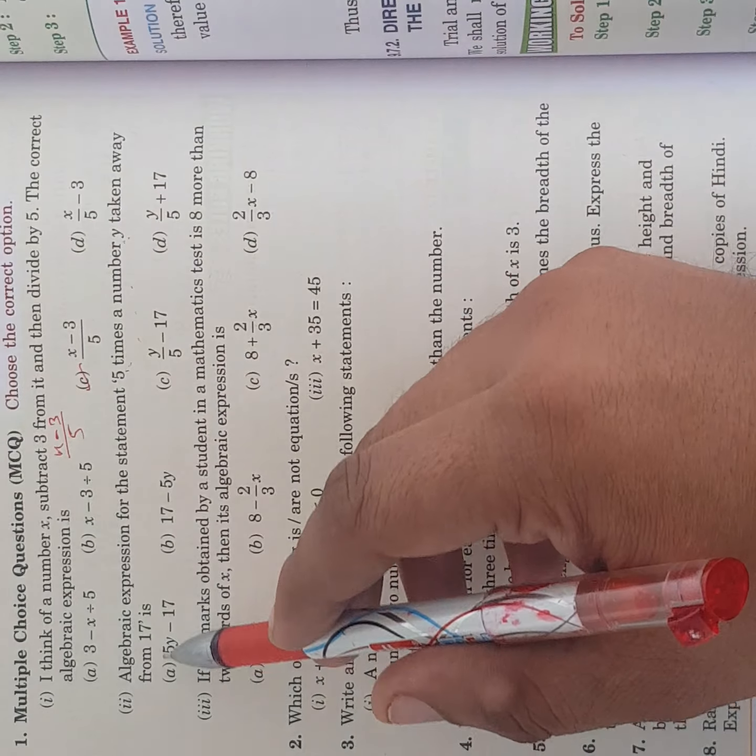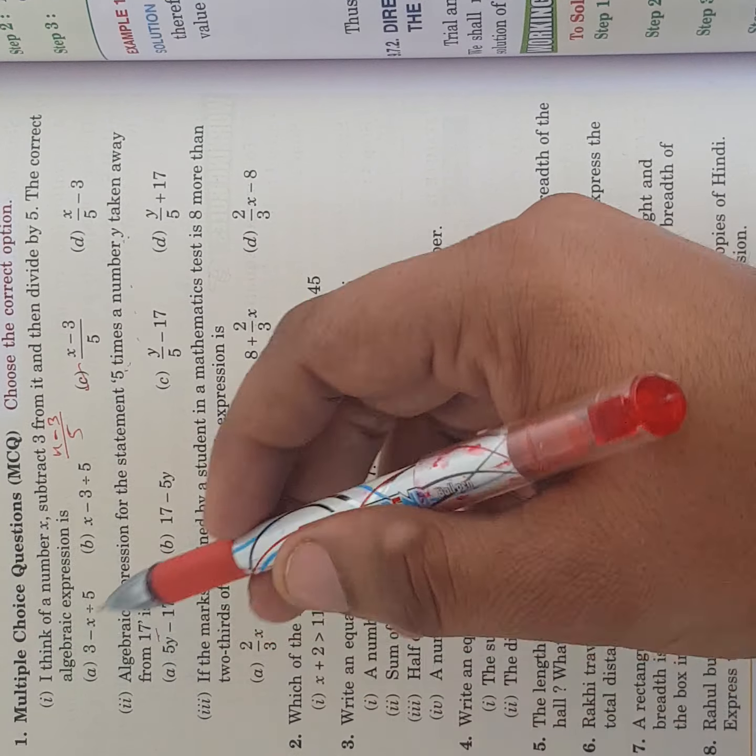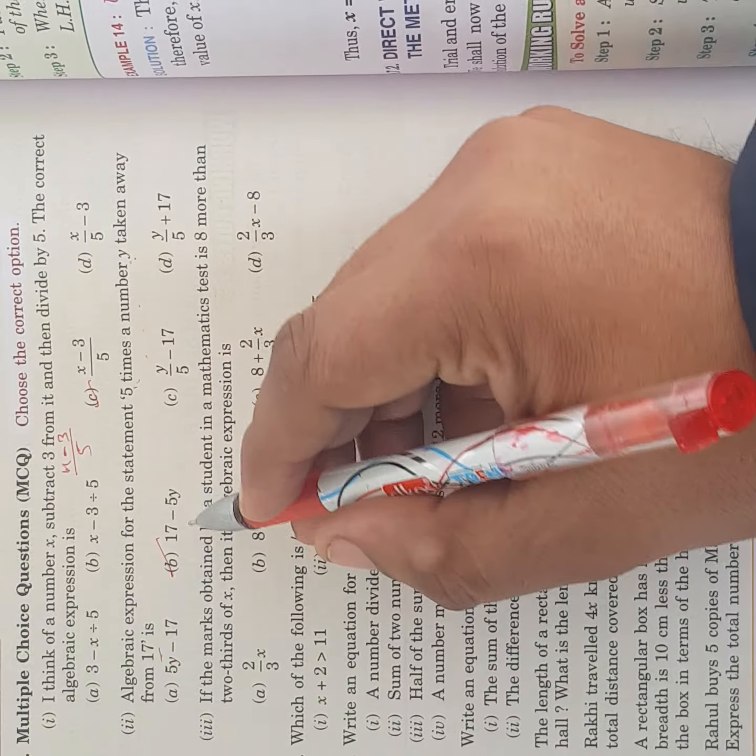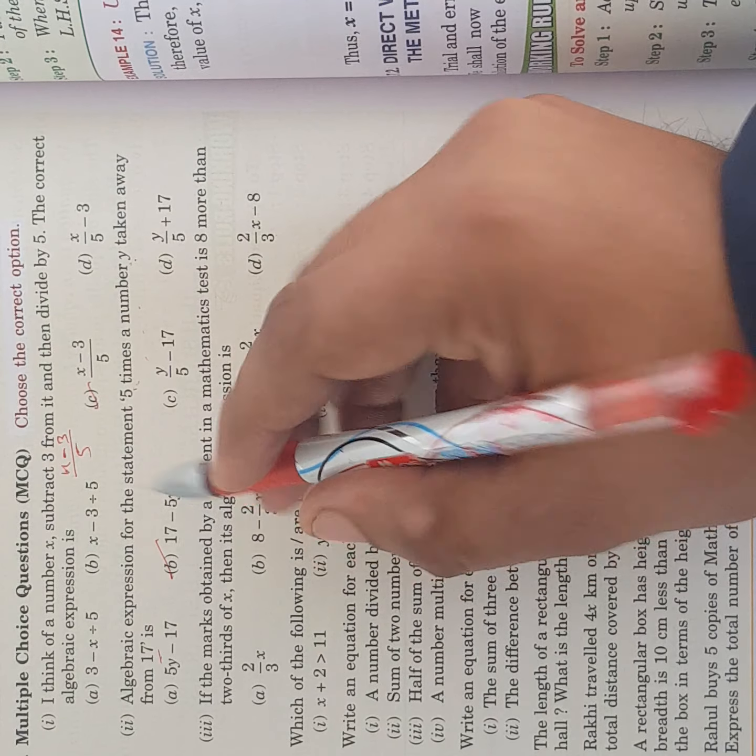First a number's 5 times and taken away from 17, 17 from which it's taken away. 17 comes first, so the answer is this one 5 times the number.